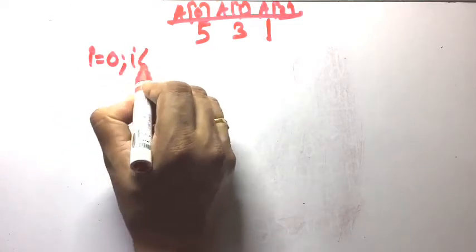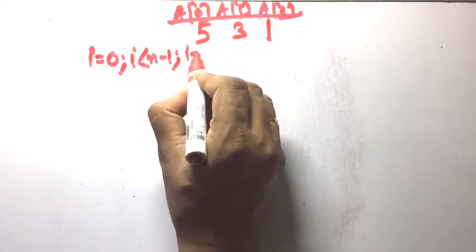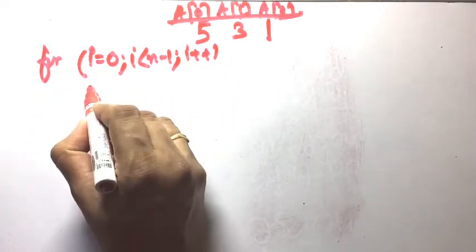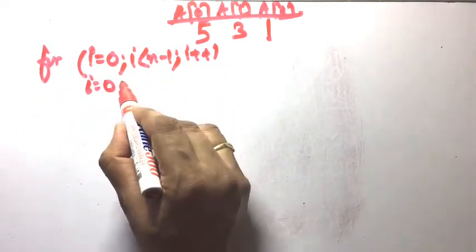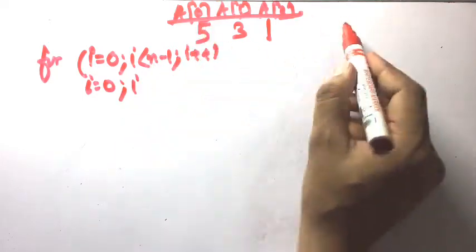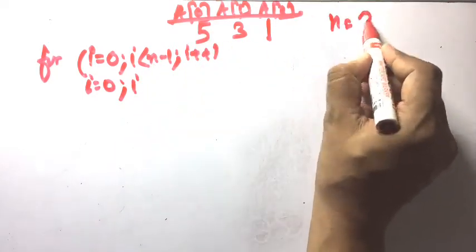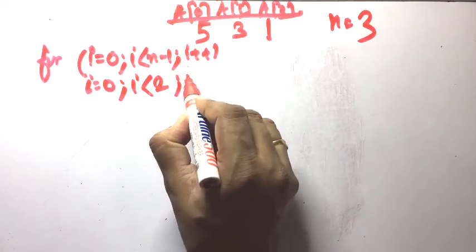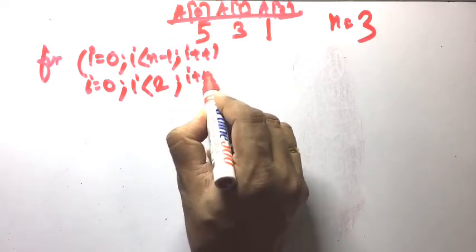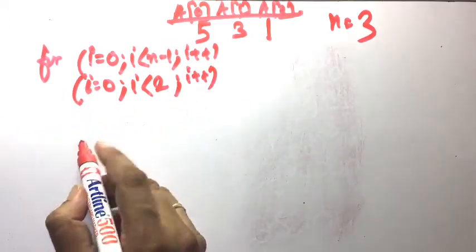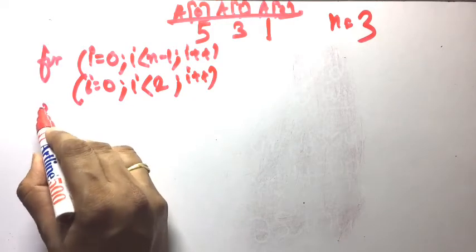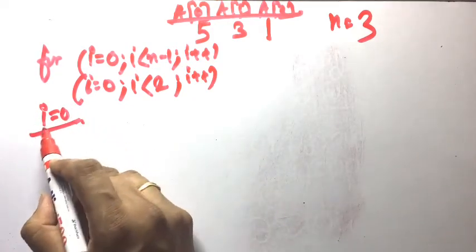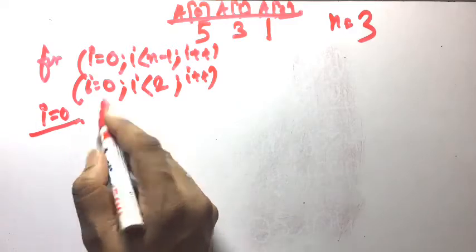The outer for loop: i equal to 0, i less than n minus 1. N is equal to 3, so i less than 3 minus 1 means less than 2, and i plus plus. When i equals 0, this is the first pass. Now this is the first pass, j loop starts: j equal to 0.